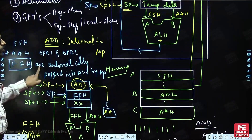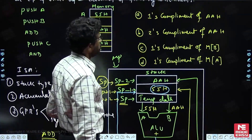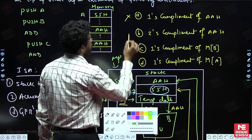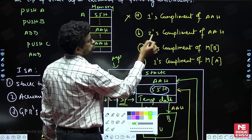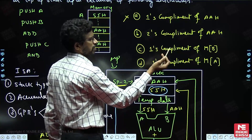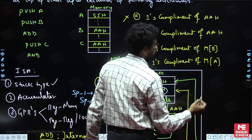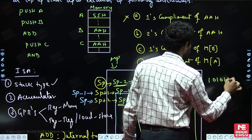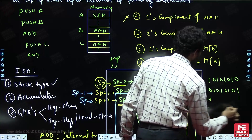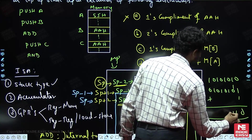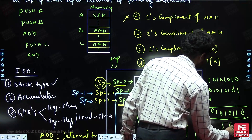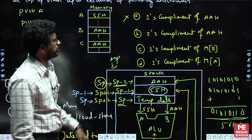The answer is AAH (double A). Now compare the options. One option says it is the one's complement of A — that is wrong, because one's complement of A (10101010) would be 01010101 = 55H, not AAH. Two's complement of A is also wrong. The option 'one's complement of memory content at address B' is also wrong, since one's complement of AAH is 55H.